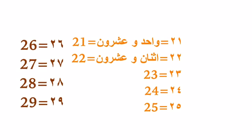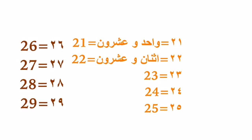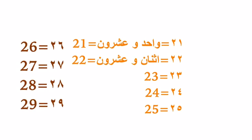Continuing: twenty-three: ثلاثة وعشرون. Twenty-four: أربعة وعشرون. Twenty-five: خمسة وعشرون. Twenty-six: ستة وعشرون. Twenty-seven: سبعة وعشرون. Twenty-eight: ثمانية وعشرون. Twenty-nine: تسعة وعشرون. This is the pattern — follow it for all other number ranges.